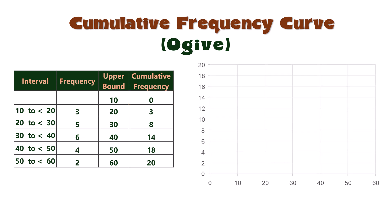We place the class upper bounds on the horizontal axis and the cumulative frequencies on the vertical axis. Begin with the point (10,0), then (20,3), (30,8), and so on. Then connect the points in order using straight lines. And that's the ogive.